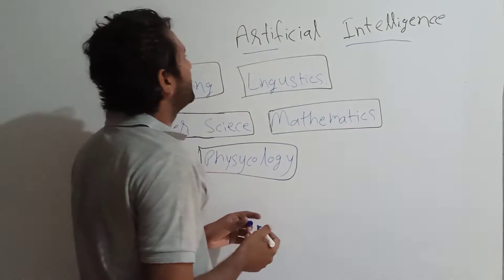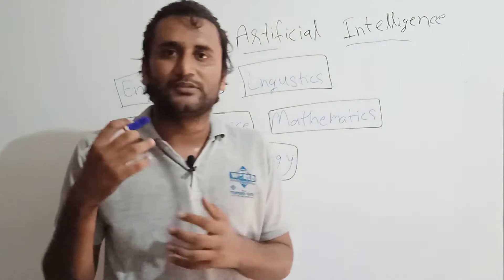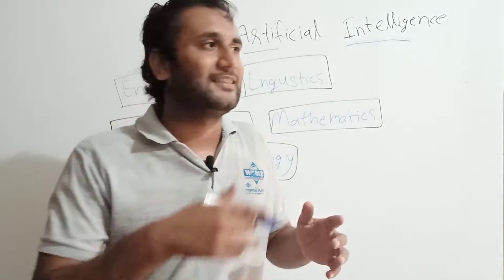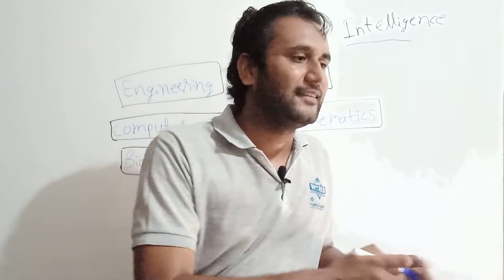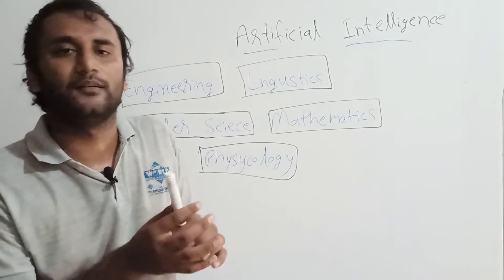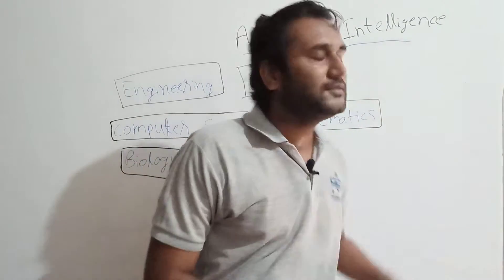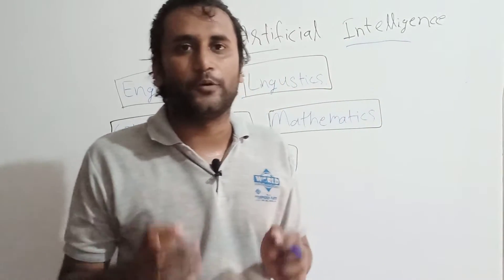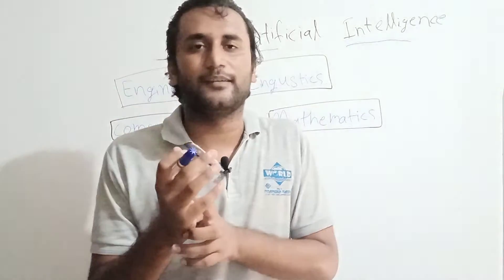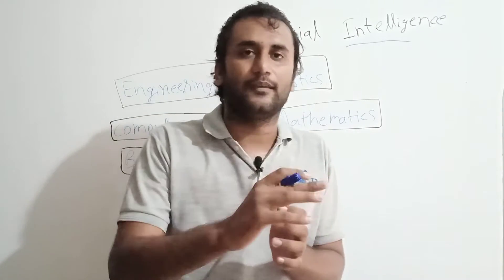The word artificial intelligence is made of two words: artificial and intelligence. Artificial means something created by humans. If someone says an object is artificial, it means it is made by humans — it is not constructed by nature.